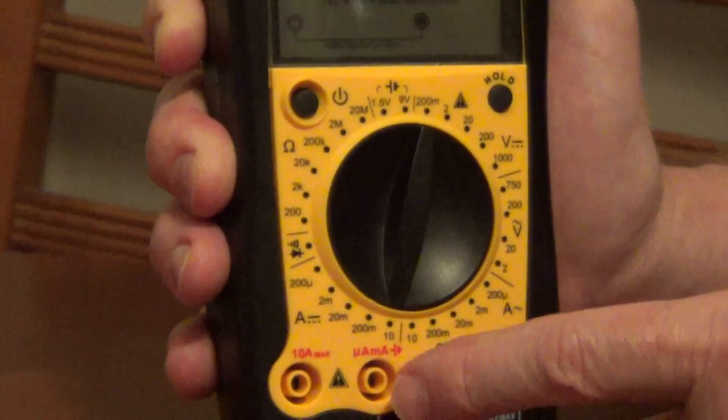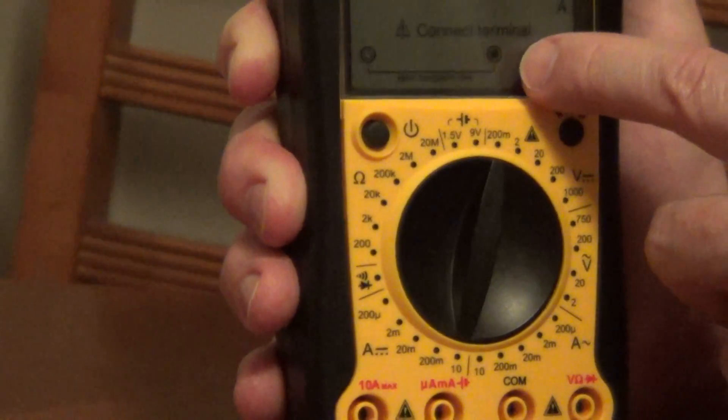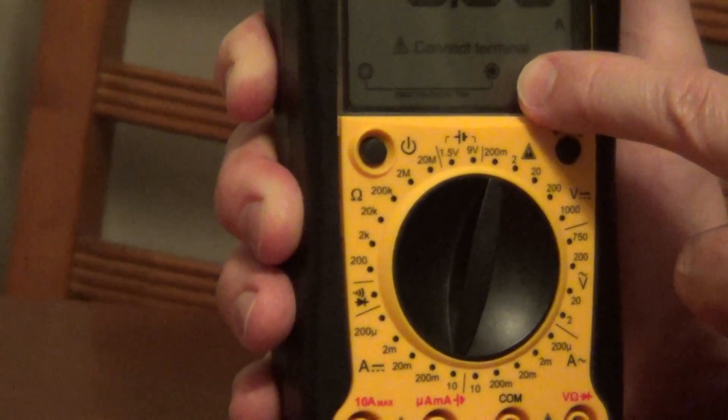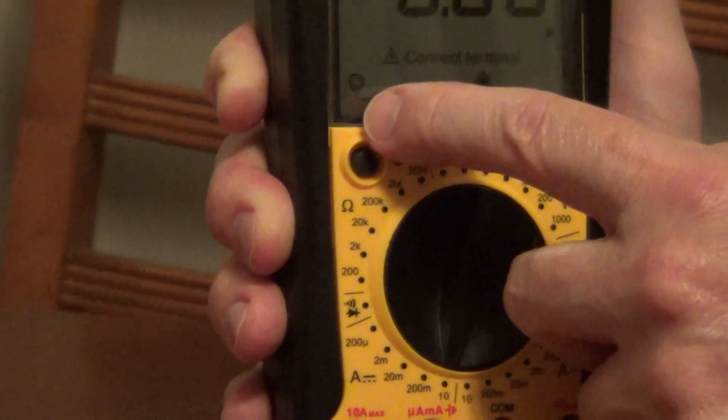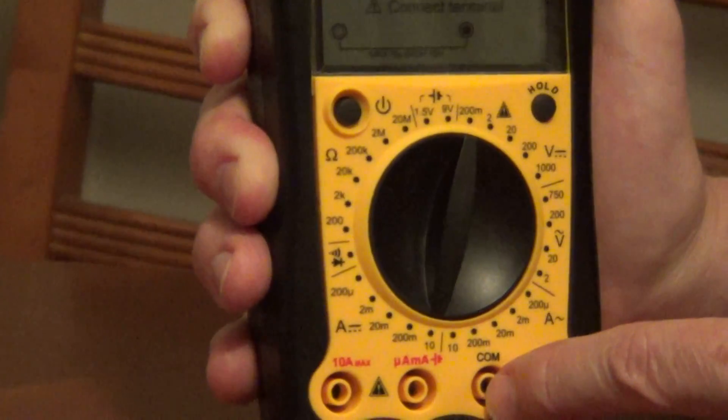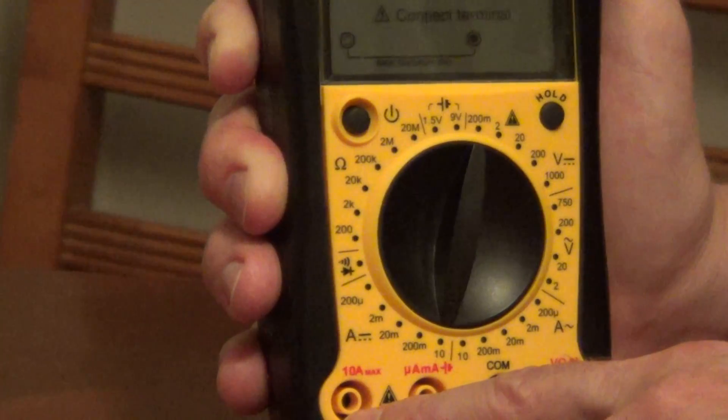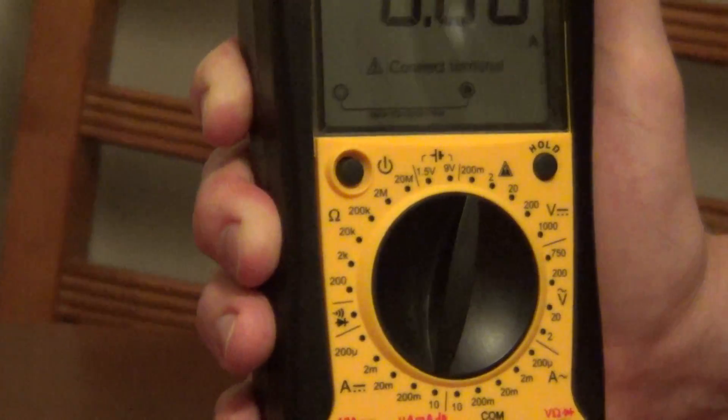In this situation, we're testing for amps direct current. It shows us that we have our black probe plugged in, there's that symbol, and then this is where we plug in our red probe. Here's COM, here's that symbol on the meter itself, and that's where we plug in our red probe.